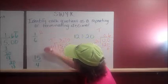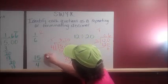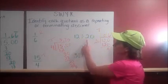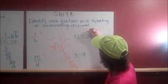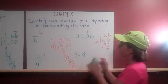So 1 sixth was repeating. 15 divided by 4 was terminating. 12 divided by 20 was terminating. And we have 1 left.